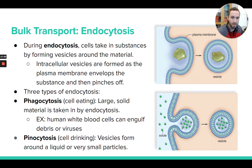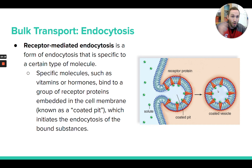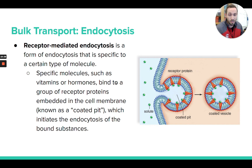In pinocytosis, the cell takes in a solution by surrounding it with the plasma membrane and forming a vesicle that pinches inward — just like shown in this picture. The last type is receptor-mediated endocytosis. This is a more specific version where there are proteins on the cell membrane waiting to bind to a very specific molecule outside the cell. Once that molecule binds to those receptors, it initiates the endocytosis process, which takes in those molecules. It's a specific, targeted process where the cell is waiting for a particular molecule to bind to its receptor proteins.